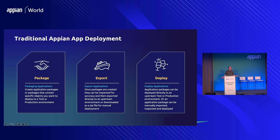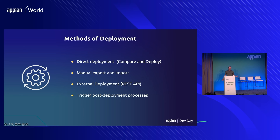The traditional Appian deployment process goes something like this: you're generally creating a package of selected objects, or maybe you've got an app you want to deploy. You would export your application and import it into another environment, or you might use the compare and deploy process. Whenever possible, we recommend using the built-in direct compare and deploy method — you can go upstream to your tech QA, your test, or your prod environments. Compare and deploy provides that end-to-end deployment process right from within Appian.